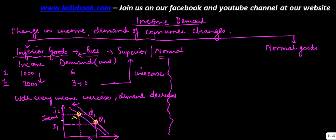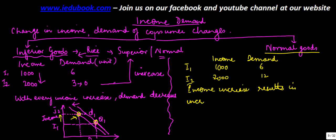Let's now take normal goods. Now in case of normal goods, as the income, let's say again 1000, 6 units at income level 1, at income to 2000, same example, the demand will increase to 12, provided he is able to consume it. So what happens in this case is that for normal goods, income increase results in increase in demand.